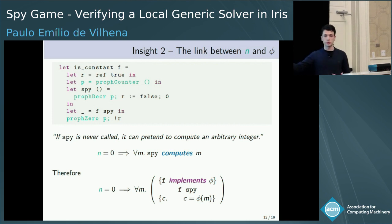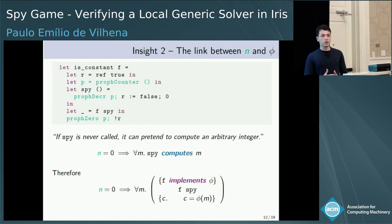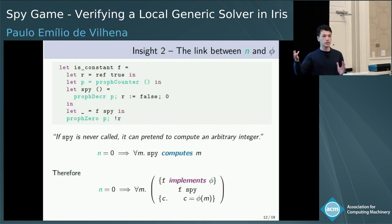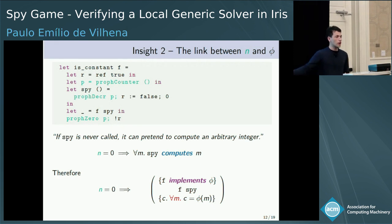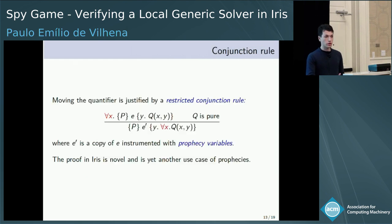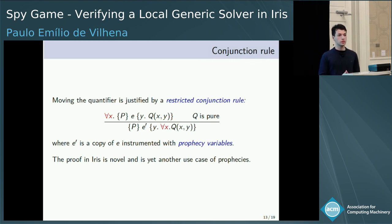From the specification, we can see we are nearly there. We only need to move the universal quantification from outside the Hoare triple to inside the postcondition. The postcondition basically says that phi is constant.